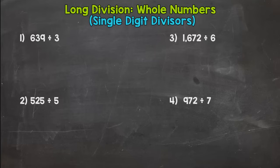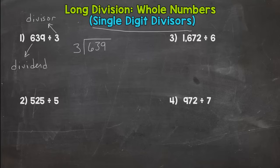The first thing we need to do is set up the problem so we can solve it. Our problem is 639 divided by 3. That 639 is what we call the dividend—it's what we are dividing up here. The divisor is what we call that 3—it's how many groups we are splitting 639 up into. Single digit divisor is going to be that outside number; all of these will have a single digit divisor.